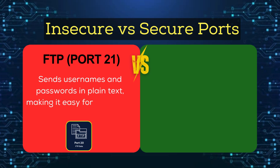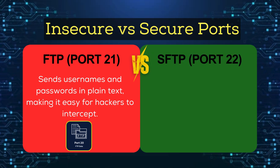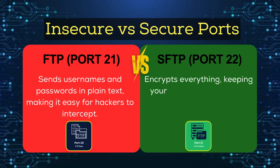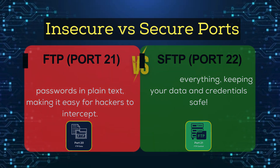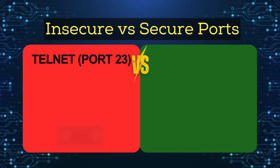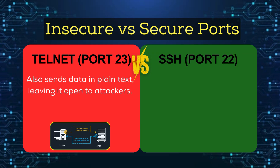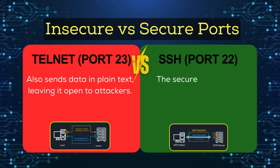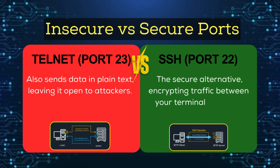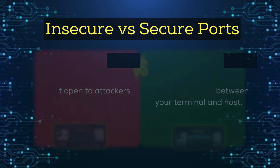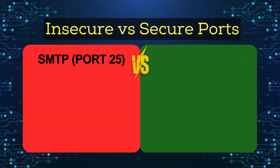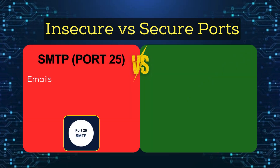Insecure versus secure ports. FTP port 21 sends usernames and passwords in plain text, making it easy for hackers to intercept. SFTP port 22 encrypts everything, keeping your data and credentials safe. Telnet port 23 also sends data in plain text, leaving it open to hackers. SSH port 22 is the secure alternative, encrypting traffic between your terminal and host.